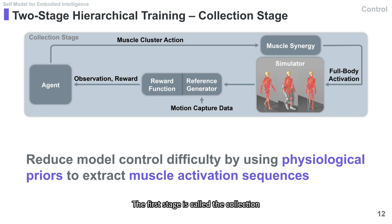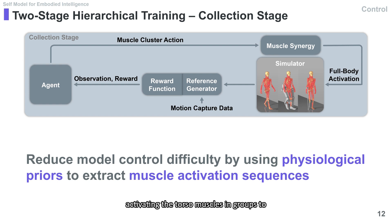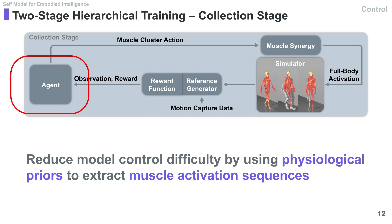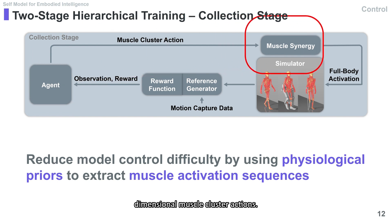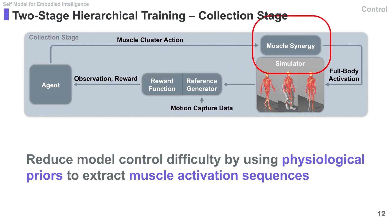The first stage is called the collection stage, where we simplify the task by utilizing physiological priors, activating the torso muscles in groups to reduce the action dimensions. In this stage, the agent generates low-dimensional muscle cluster actions.